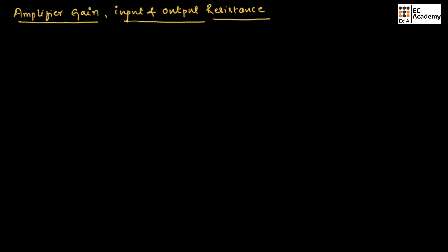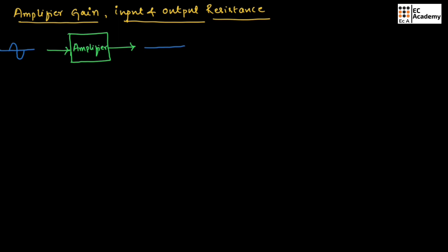To understand this concept, let us consider an amplifier with input signal as well as output signal. The input signal will be a small signal and output signal will be a large signal. Both input signal and output signal consist of voltage and current, which we call V_in (input voltage), I_in (input current), V_naught (output voltage), and I_naught (output current).